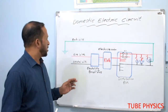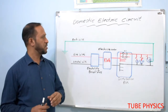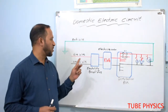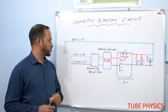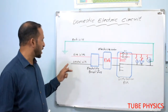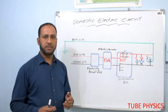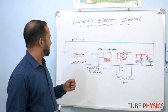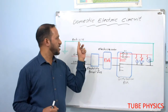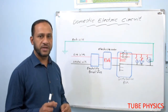In a domestic electric circuit, there are three different types of wires. The first wire is the live wire, which is usually red in colour. The second one is the neutral wire, which can be black or grey in colour. And the third one is the earth wire, which is always given a green colour.